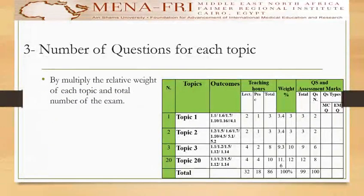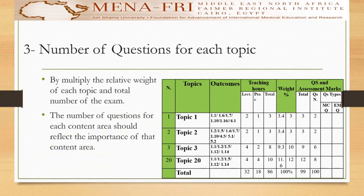The number of questions for each topic is determined by multiplying the relative weight of each topic by the total number of exam questions. This gives you the number of questions for each topic. The number of questions for each content area should reflect the importance of that content area.